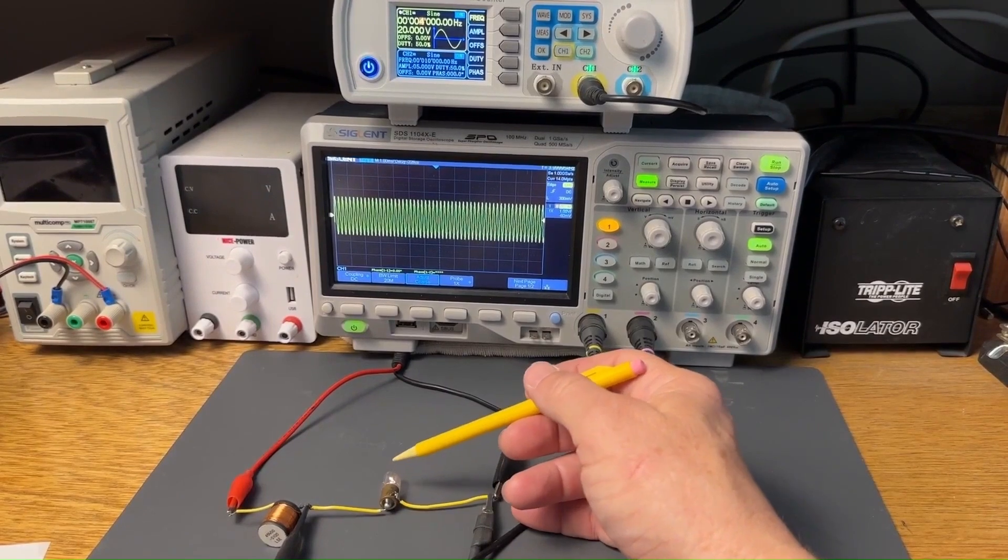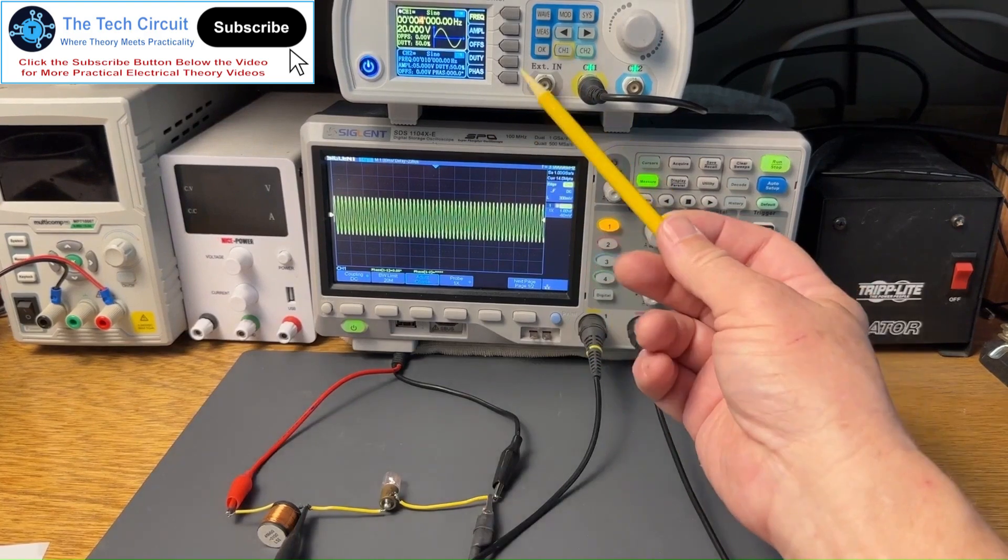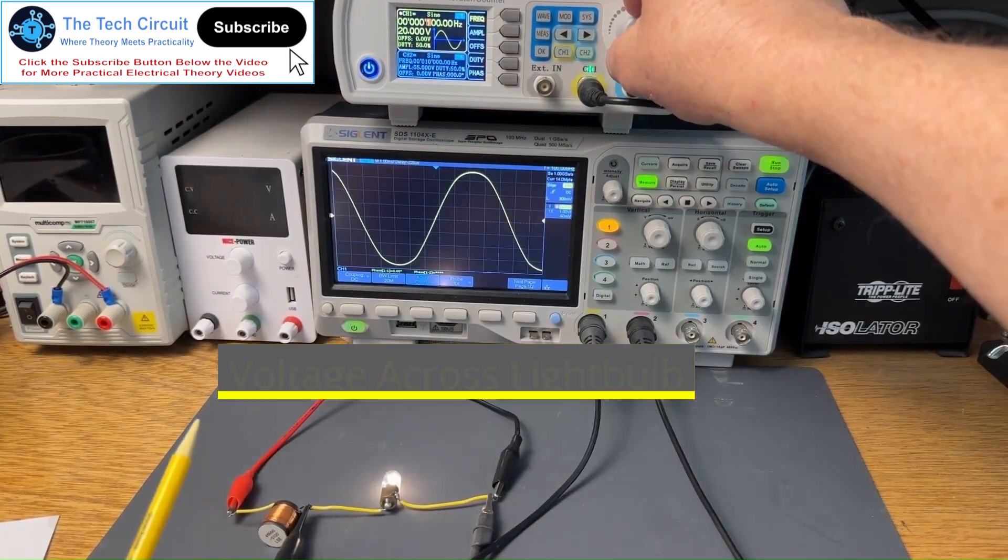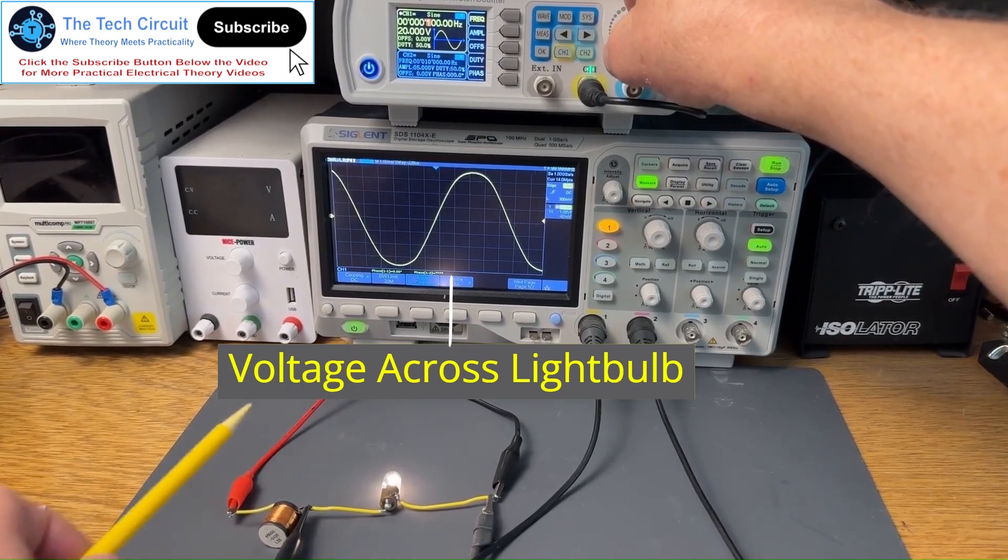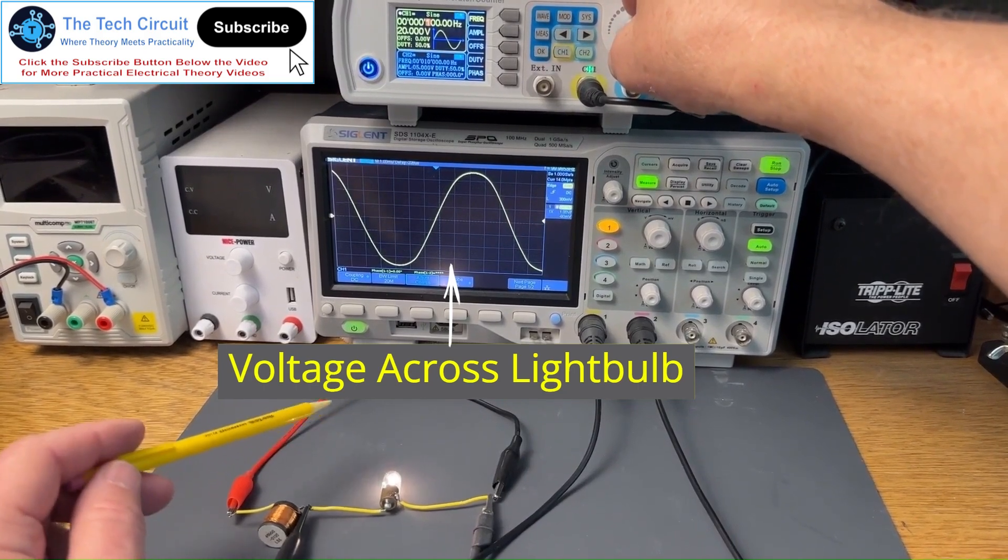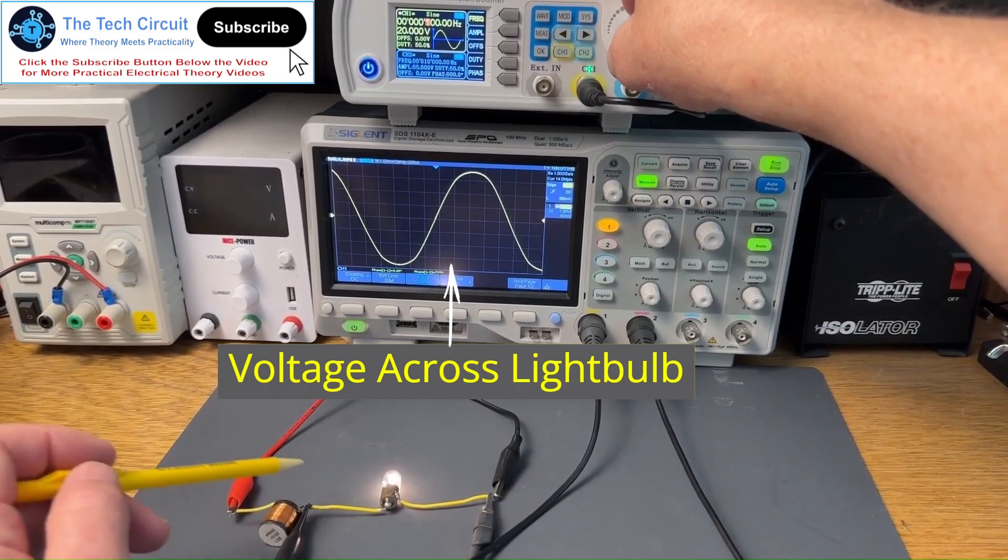Here we have a small incandescent light bulb in series with a 5.5 mH inductor. Of course, we have this signal generator here as our voltage source. As I start with a near DC voltage, or close to zero hertz, you can see the light bulb is fully lit. This inductor right now is exhibiting the minimum inductive reactance of near zero ohms, less the resistance of its coil of wire, of course.